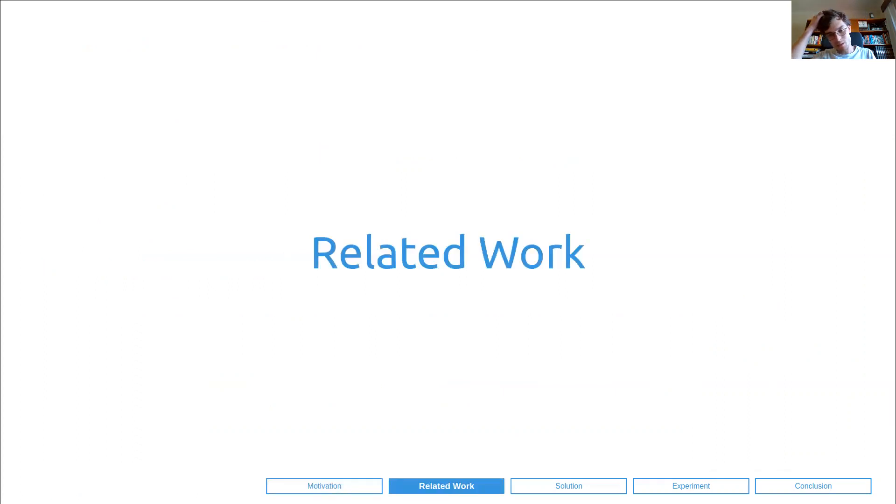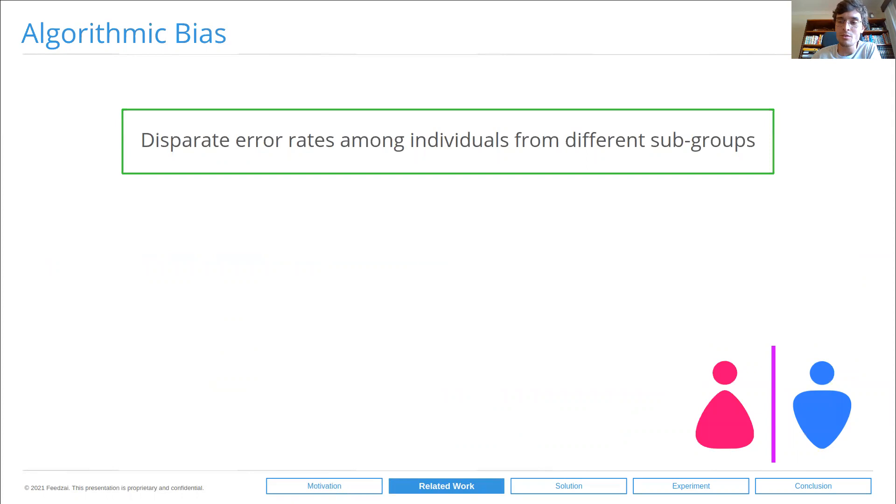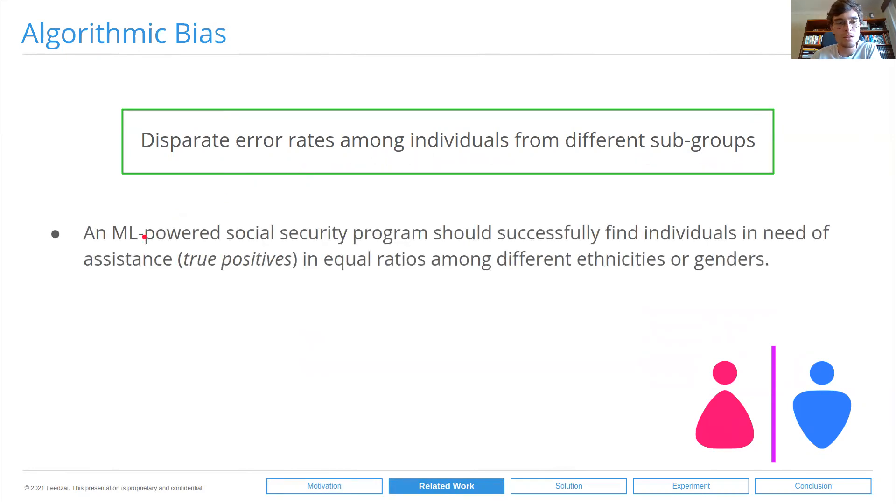Now let's take a brief look at the literature of algorithmic fairness. First, we have to define it. Algorithmic bias is often defined as disparate error rates among individuals from different subgroups. If we take a hypothetical case of a machine-learning-powered social security program, an assistive program, it should successfully find individuals in need of assistance. These are true positives in equal ratios among different ethnicities or genders. That is, it should not spend its whole assistive budget on individuals from a given ethnicity or a given gender. It should be proportionately distributed. This translates into equal true positive rates.